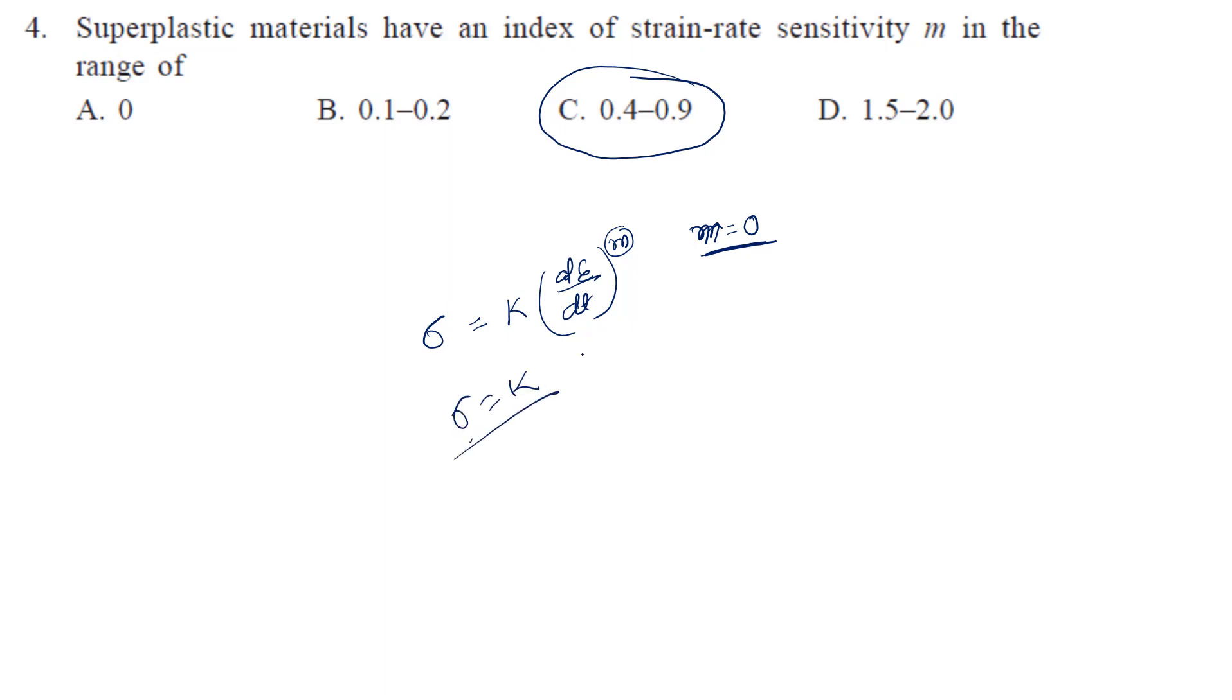So that means sigma is equal to k. So sigma is independent of strain rate. So that means if we increase the strain rate or decrease the strain rate, the tensile stress-strain curve is going to be same. But as we increase this m value, it shows some dependence. So accordingly, there will be plastic deformation.